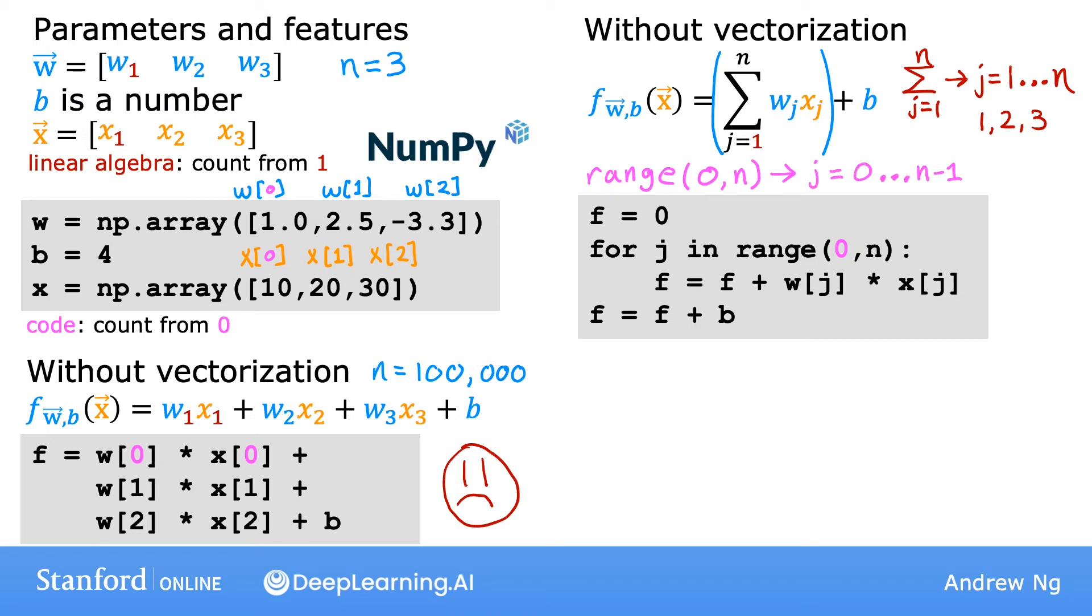Finally, outside the for loop you add b. Notice that in Python the range zero to n means that j goes from zero all the way to n minus one and does not include n itself. And more commonly this is written range n in Python, but in this video I added a zero here just to emphasize that it starts from zero. While this implementation is a bit better than the first one, it still doesn't use vectorization and isn't that efficient. Now let's look at how you can do this using vectorization.